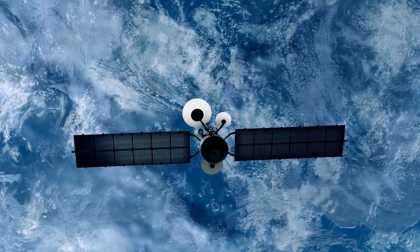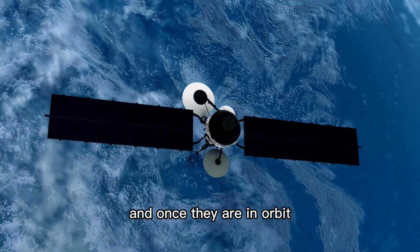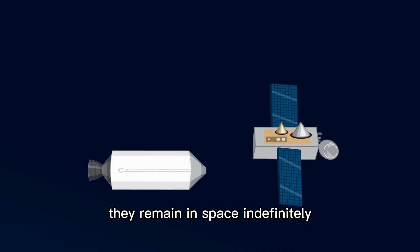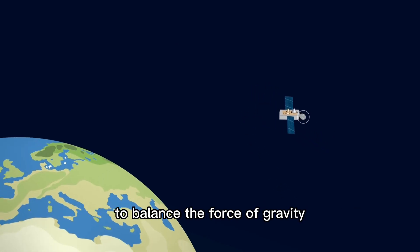Satellites are launched into space using rockets, and once they are in orbit, they remain in space indefinitely. They can stay in orbit because they are moving at just the right speed to balance the force of gravity with their forward momentum. This is known as orbital velocity.